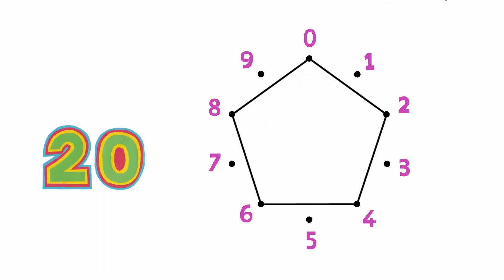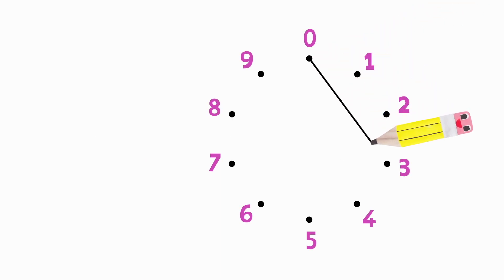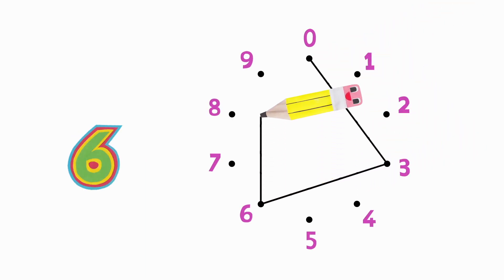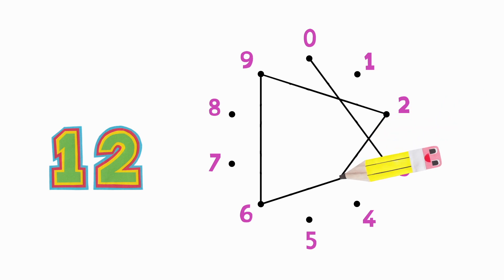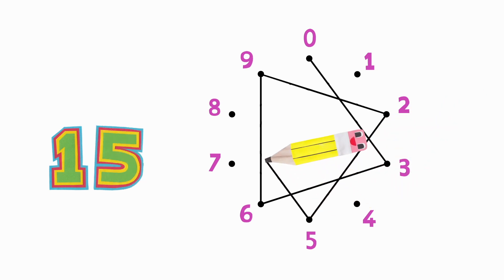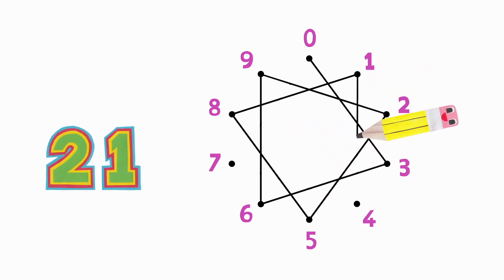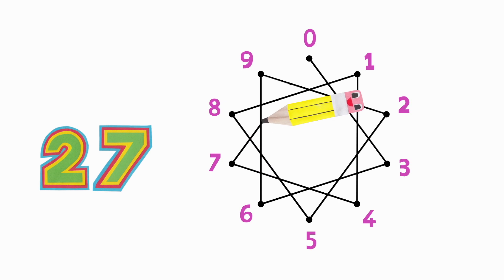Three times table. Three, six, nine, twelve, fifteen, eighteen, twenty-one, twenty-four, twenty-seven, thirty.